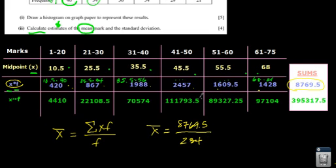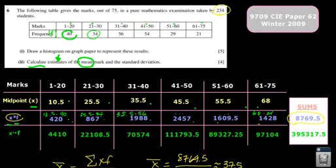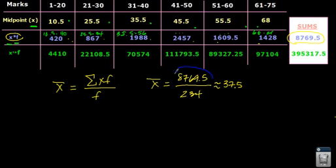So my mean, x-bar, is 8,769.5 divided by 234. That comes out to approximately 37.5 — rounded from 37.476. We round on our Cambridge exams to three significant figures. The mean x-bar equals 37.5. Now we need to do the standard deviation. You'll notice I left this fraction here on my Cambridge paper — I would write 37.5 as my answer because they want three significant digits, but I would keep this exact fraction because you're going to have to use it for the standard deviation.